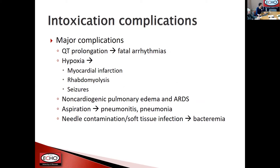Major complications besides overdose include QT prolongation — drugs like methadone can lengthen the QT interval and trigger fatal arrhythmias. Prolonged hypoxia during overdose can lead to myocardial infarction, rhabdomyolysis, or seizures. Heroin overdose is classically associated with a non-cardiogenic form of pulmonary edema. The anti-cough effects can lead to aspiration and chemical pneumonitis or bacterial pneumonia. Needle contamination or soft tissue infection can result in bacteremia, and these complications can occur alongside their own distinct symptom presentations.